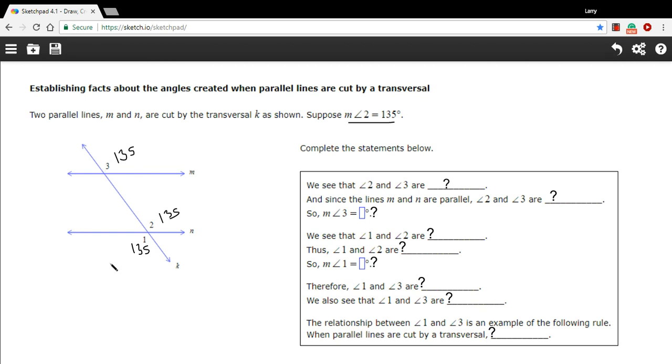There are also names for these angles here. So 2 and 3, they occupy the same position on each of these intersections. 3 is on the upper right, 2 is on the upper right. That makes them corresponding angles. 3 and 1 are exterior angles. They're on the outside of these two parallel lines, and they're diagonally across from each other, so they're what we call alternate exterior angles. I think that's all that's really relevant here.